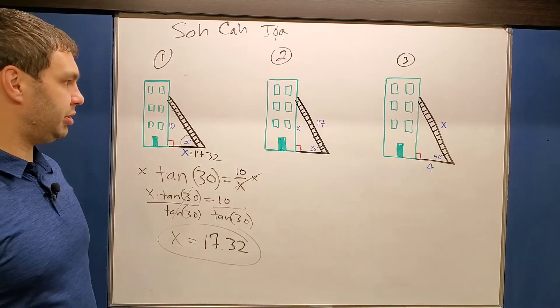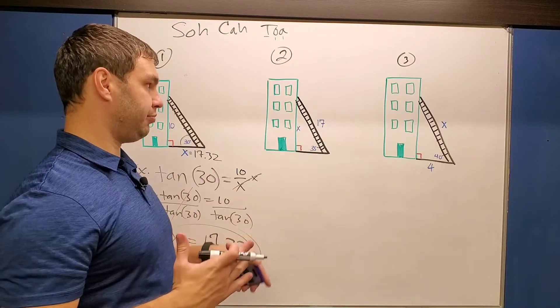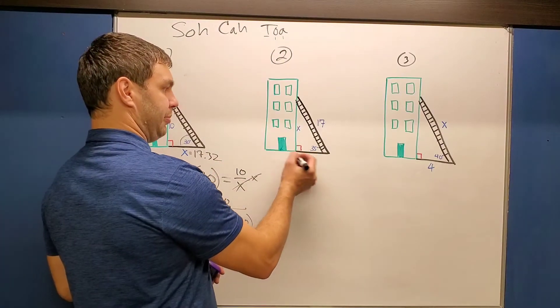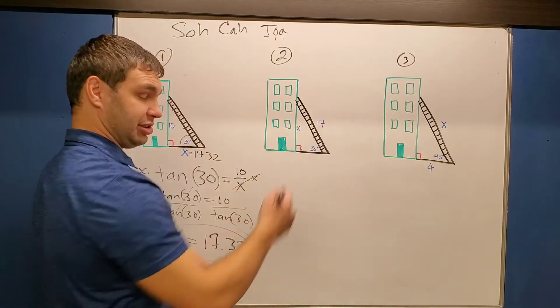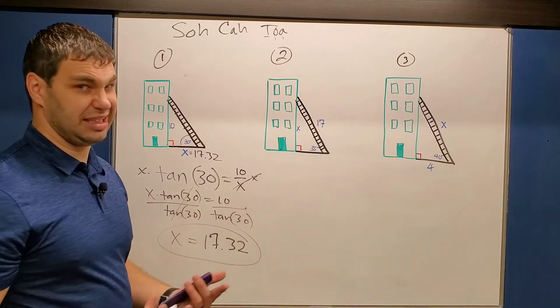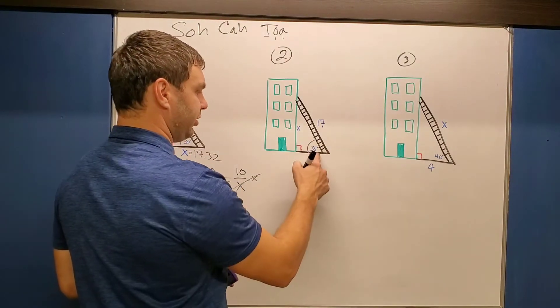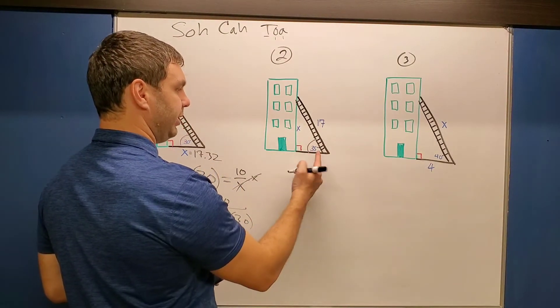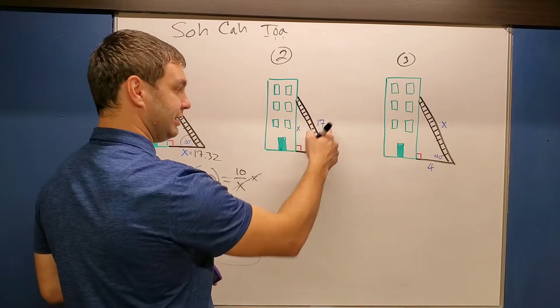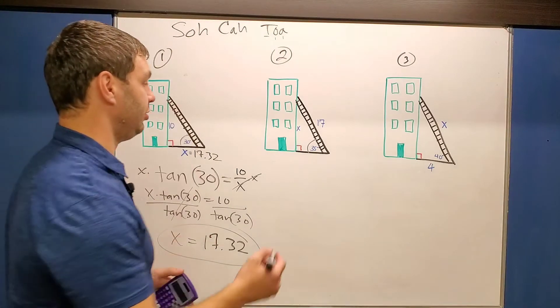Number two, it looks like we need to find the distance that this ladder leans up the wall. And so my hypotenuse is 17. Hypotenuse is always going to be our longest side. So in this case, the X should be something less than 17. That's a way you can check you're doing it right. I have this angle 35 down here, 35 degrees. Compared to it, I have its opposite and its hypotenuse. Well, opposite and hypotenuse is sine, the S in SOHCAHTOA.